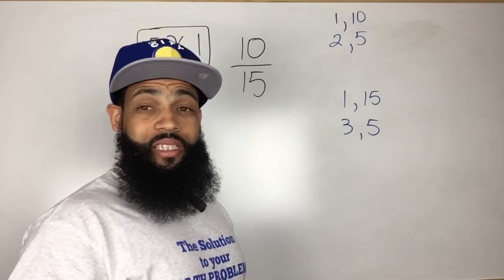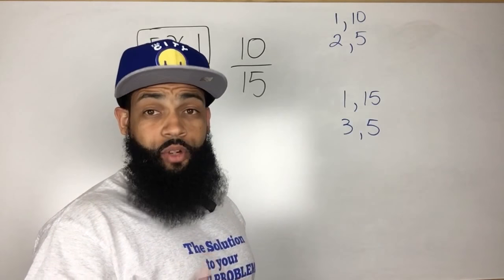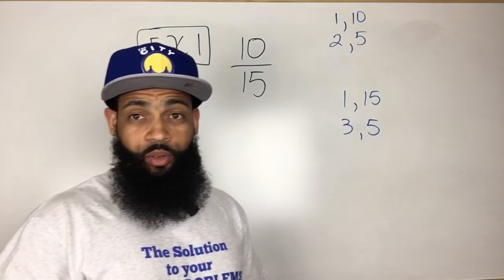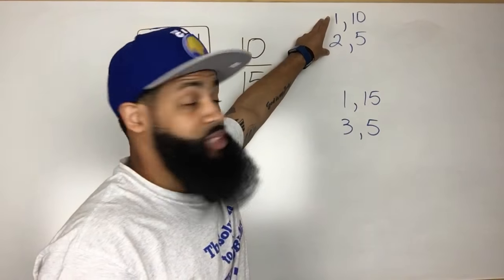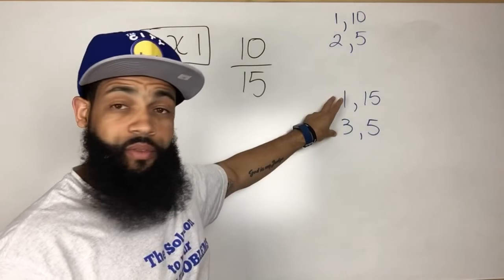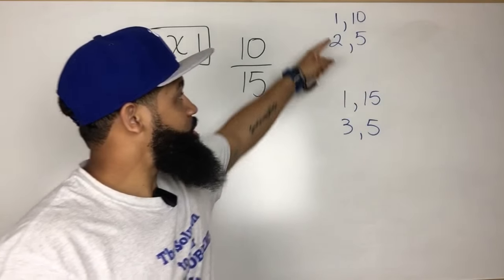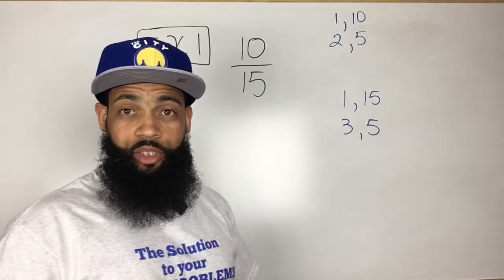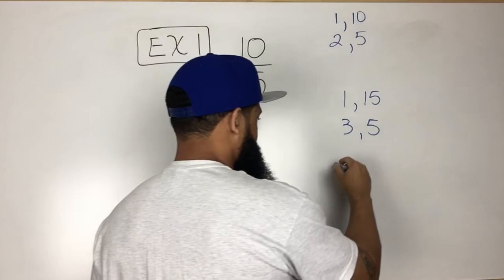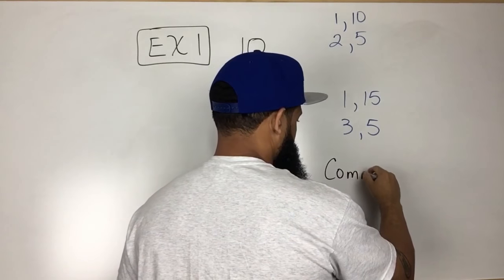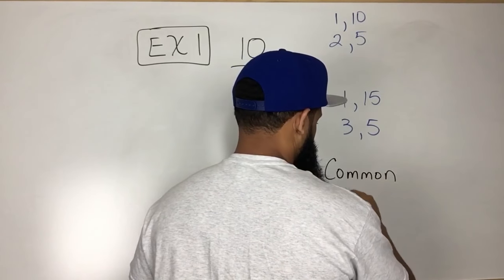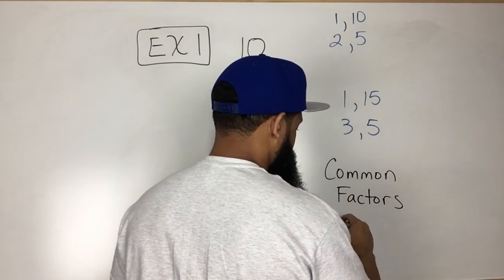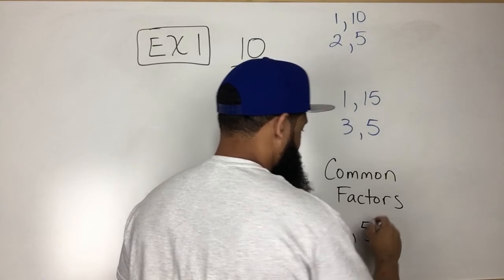Now the greatest common factor, first of all we have to find the common factors. And that's a factor that is a factor of 10 as well as a factor of 15. Well as we can see they have a 1 in common, they also have a 5 in common. So the common factors of 10 and 15 are 1 and 5.